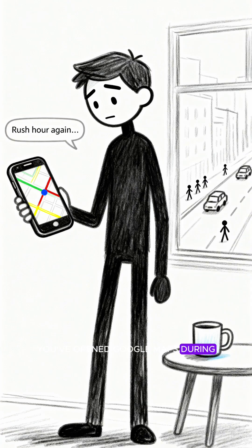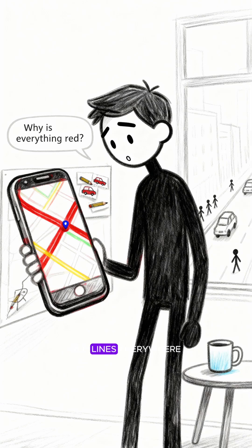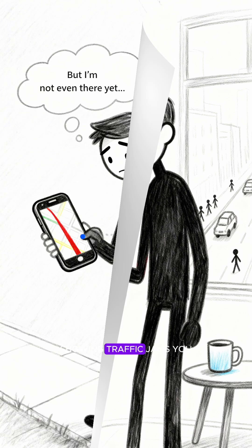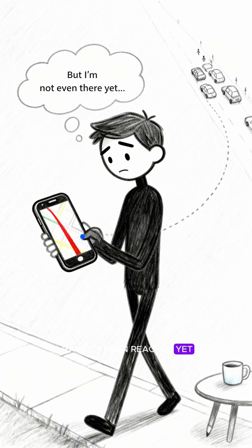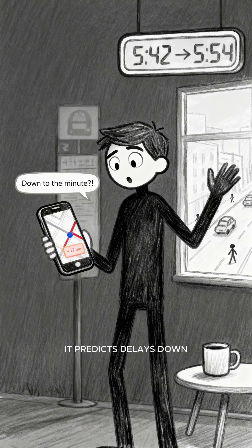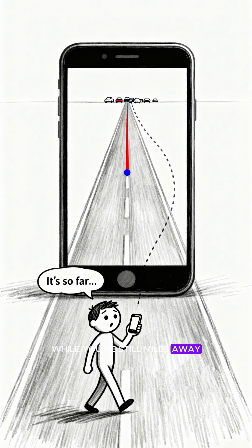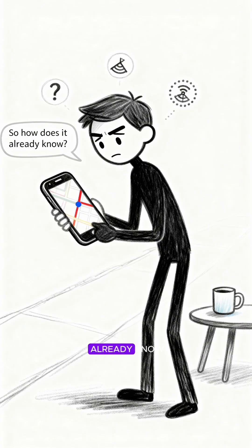You've opened Google Maps during rush hour, right? Red lines everywhere showing traffic jams you haven't even reached yet. It predicts delays down to the minute while you're still miles away. So how does it already know?